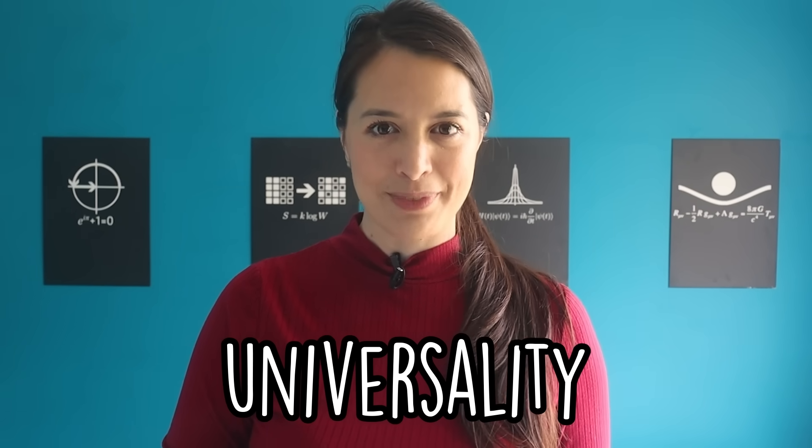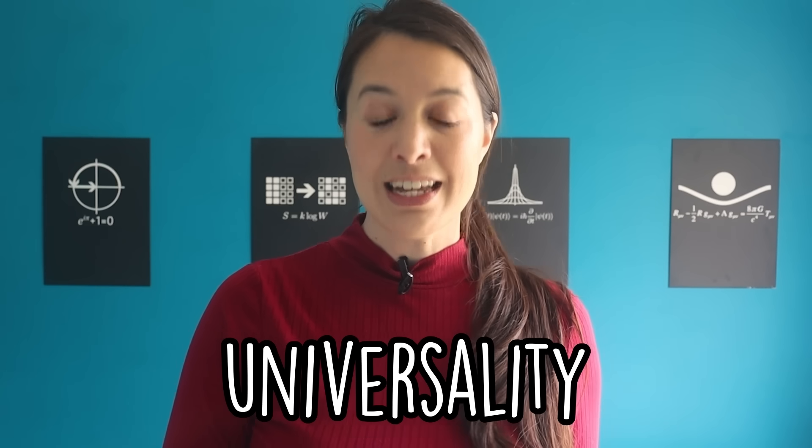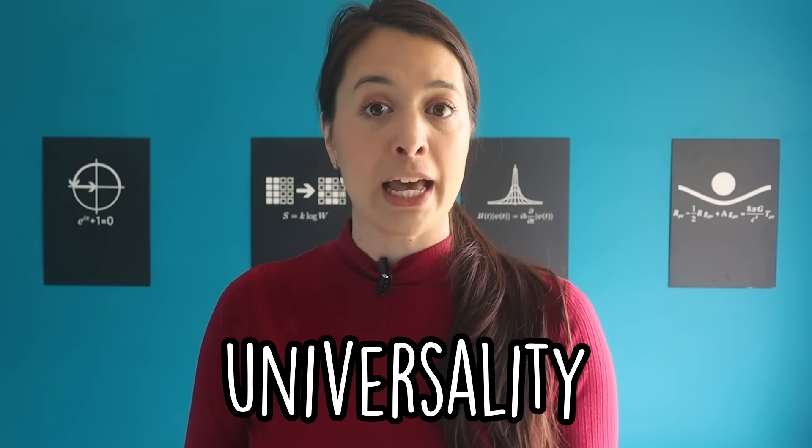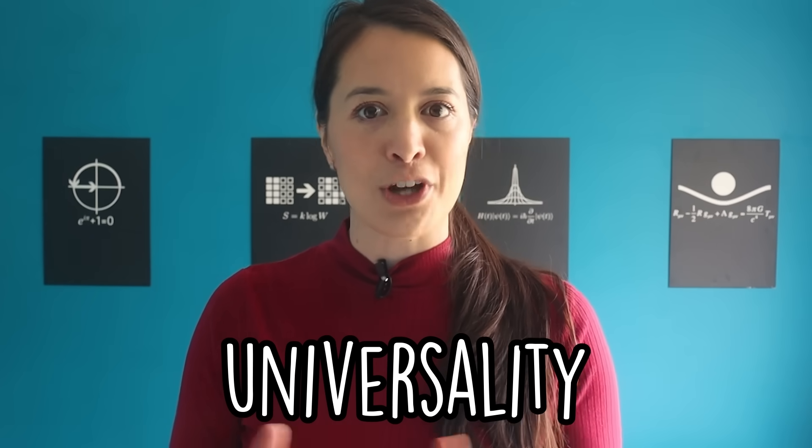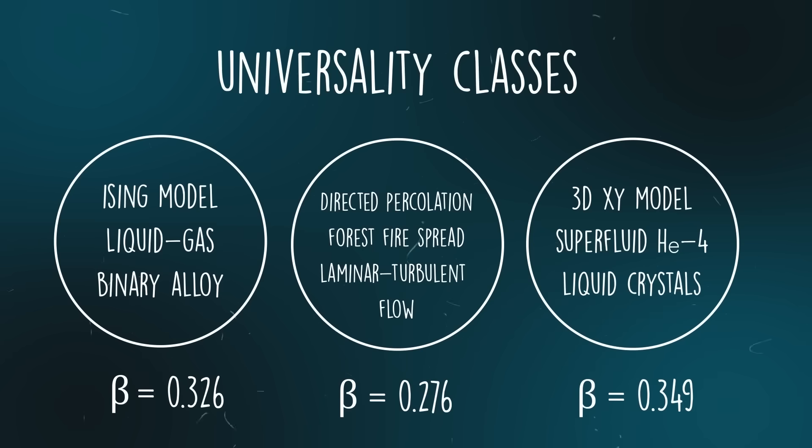This phenomenon is called universality. Universality is the idea that different physical systems behave similarly near their phase transitions, even though their microscopic building blocks are different. Physicists categorize different models having the same critical exponents into classes, called universality classes. Because the Ising model and the liquid to gas system have the same critical exponent, they both belong to the same universality class.